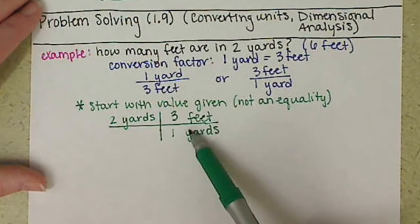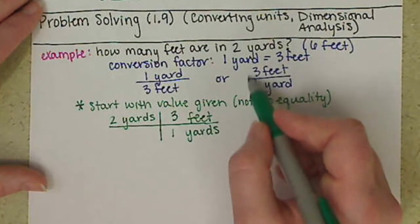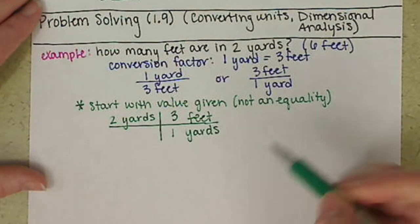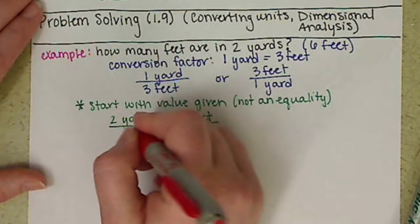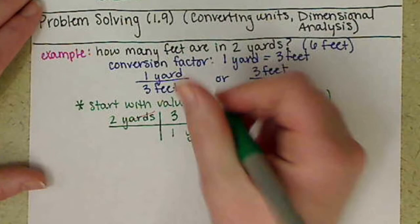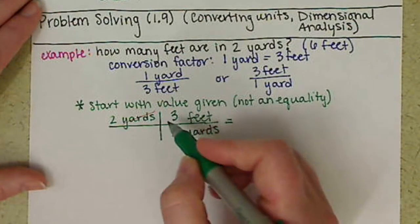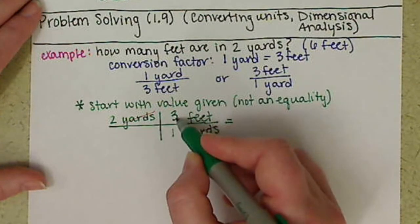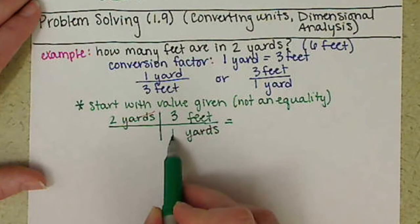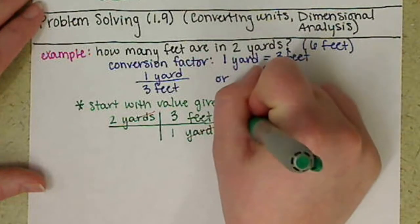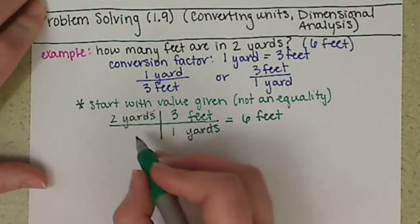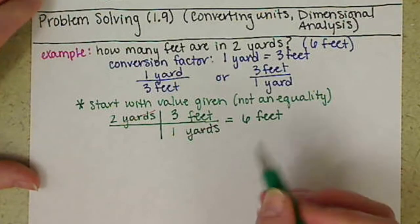I'm using this conversion factor, the second one we wrote, to fill in there. Then my units—yards are divided by yards—anything divided by itself is one. To do this calculation, we're going to multiply across and divide down. So we have two times three divided by one, which gives us our six feet.